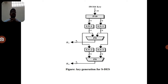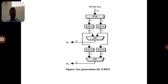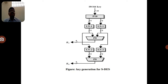As discussed in previous videos, the key is the heart of cryptography — without a key, we cannot encrypt data. Whatever the size of the plain text, the same size key is used. If the plain text is 8-bit, the key should be 8-bit; if 16-bit, the key should be 16-bit; if 32-bit, the key should be 32-bit.